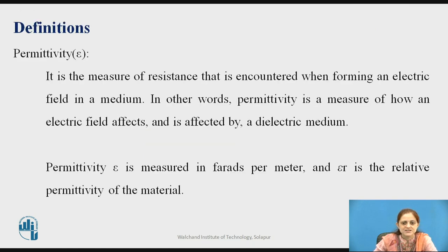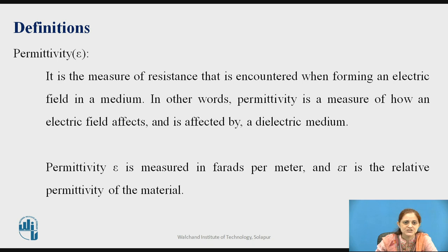Before going to start all boundary conditions when considering two different media, recall some definitions required to define boundary conditions. Here, epsilon is nothing but the permittivity — it is the measure of resistance encountered when forming an electric field in a medium. In other words, permittivity is a measure of how an electric field affects and is affected by a dielectric medium. It is denoted with the letter epsilon and measured in Farads per meter, whereas epsilon_r is the relative permittivity of the material.